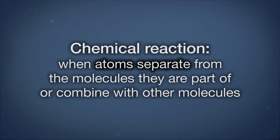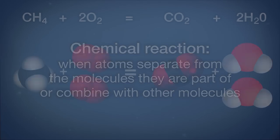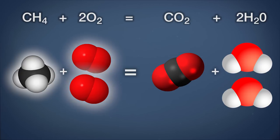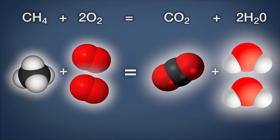A chemical reaction occurs when atoms separate from the molecules they are part of or combine with other molecules. For example, when methane, CH4, burns in the air, it combines with two molecules of oxygen, O2, to create one molecule of carbon dioxide and two molecules of water: CH4 + 2O2 → CO2 + 2H2O.